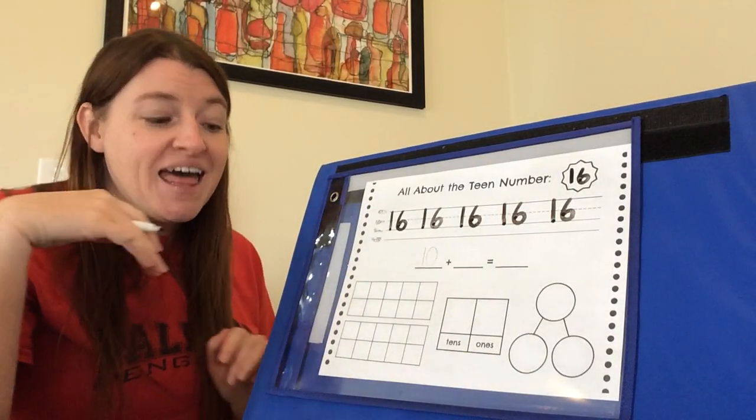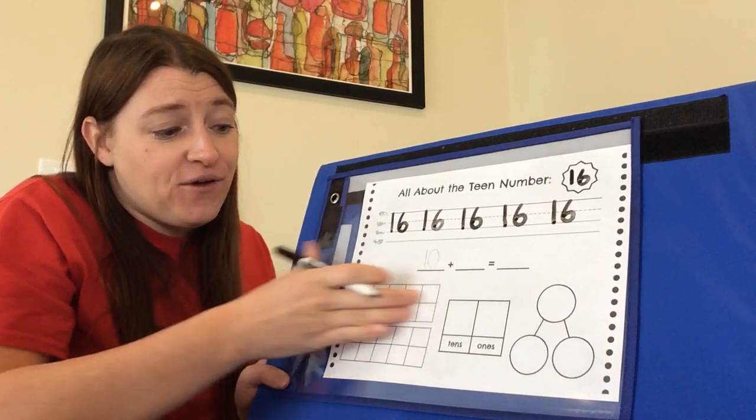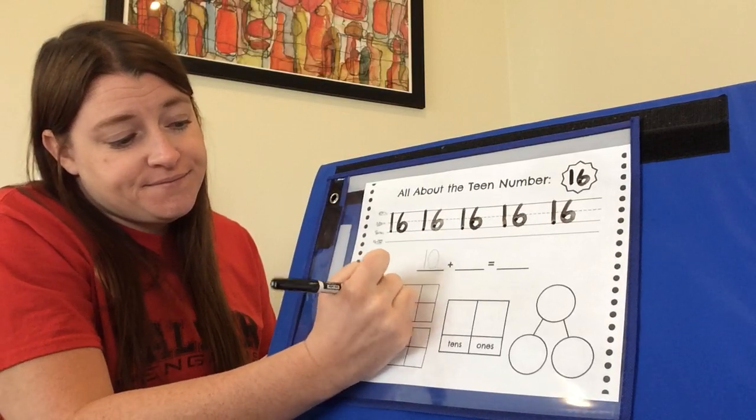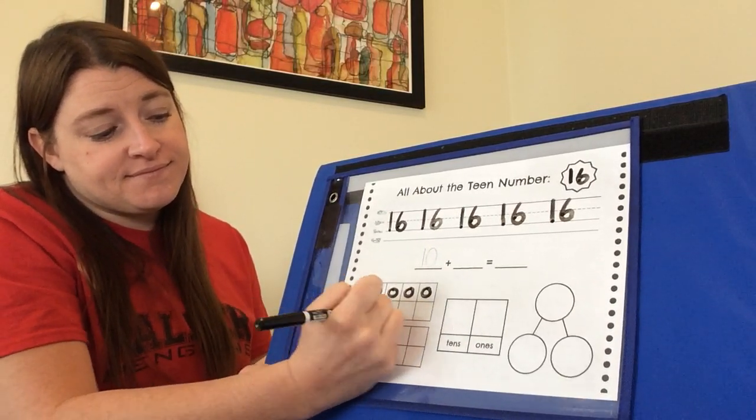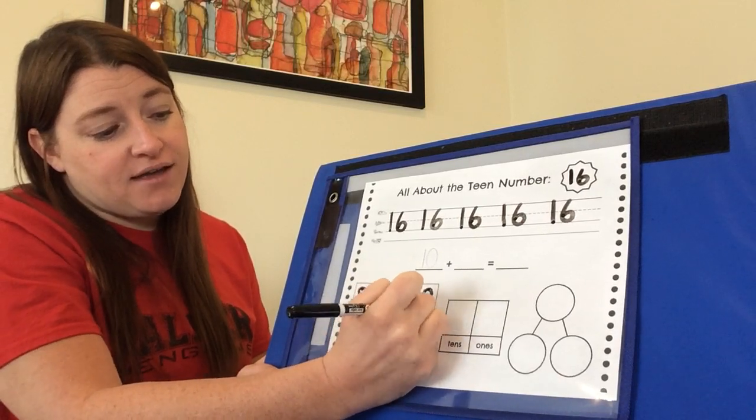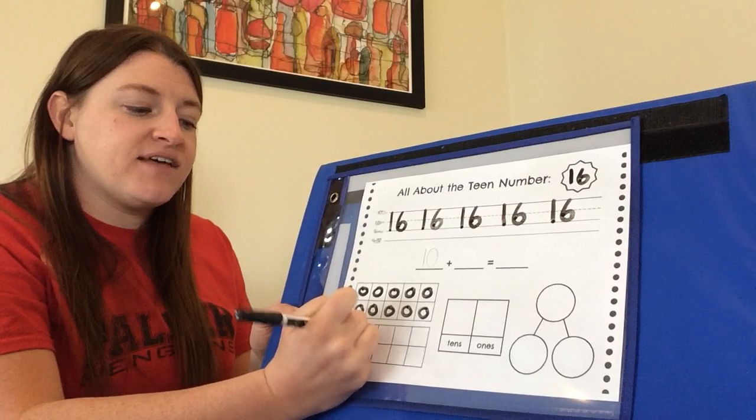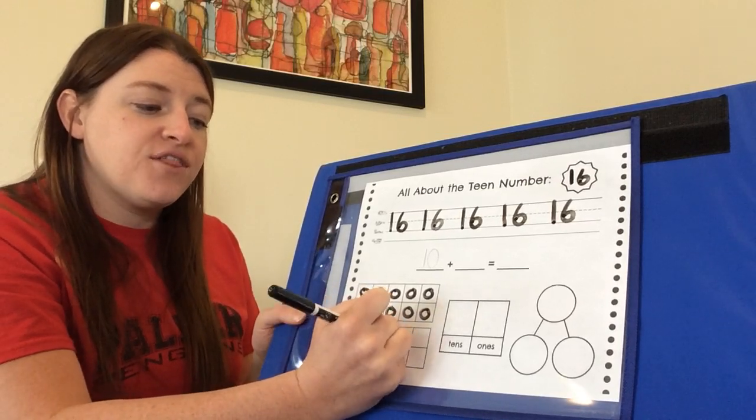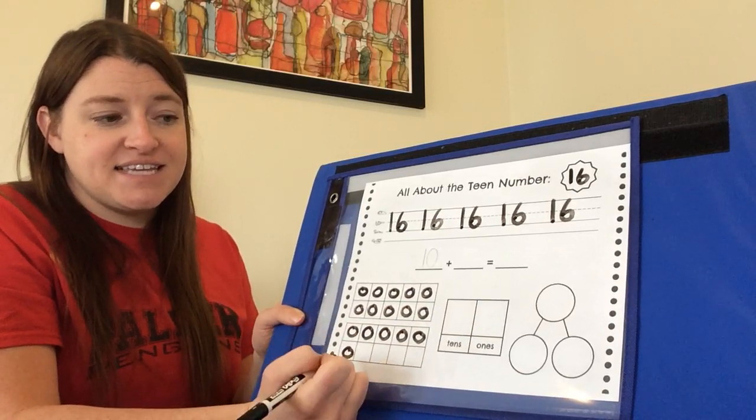Like all teen numbers, a 10 or 16 starts with a full group of 10. So here we go. Okay. 10, 11, 12, 13, 14, 15, 16.